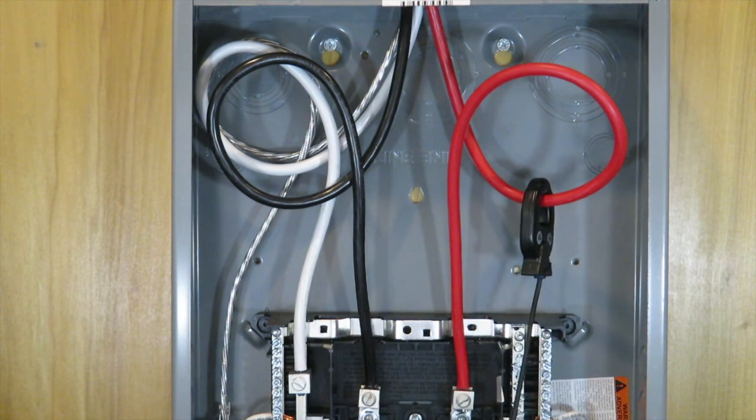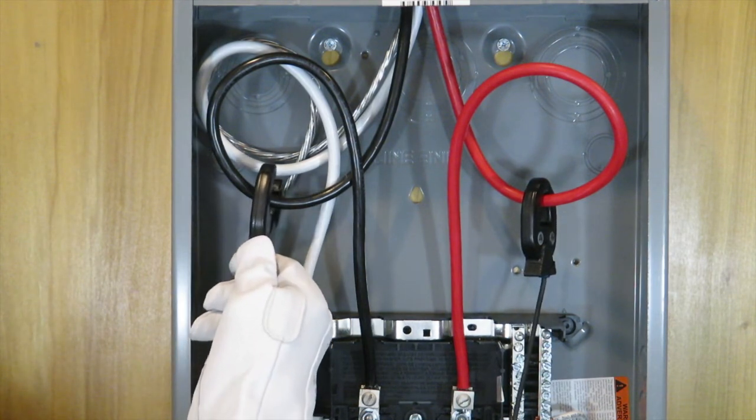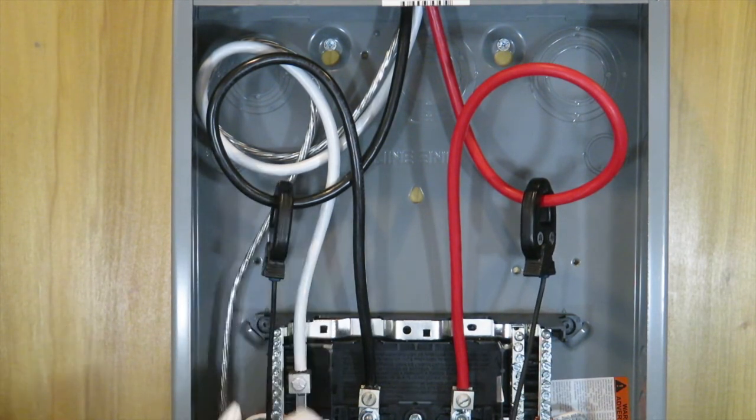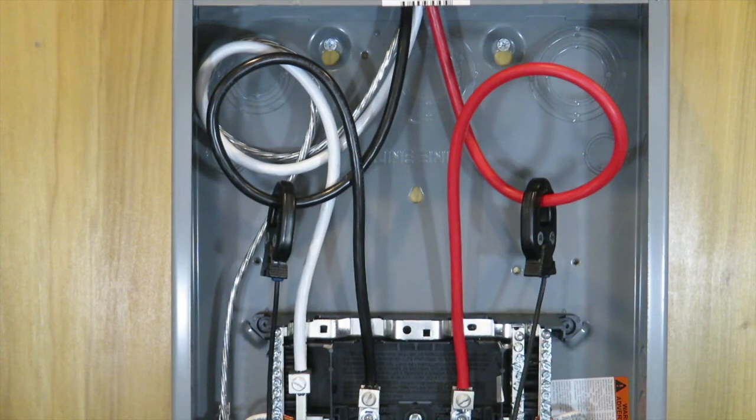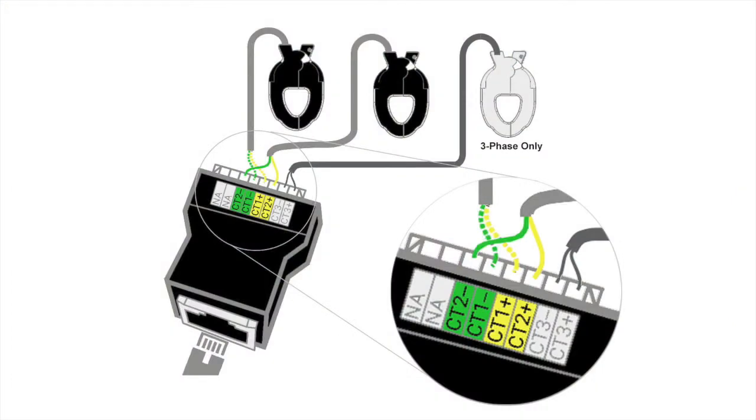It is important that the CTs are placed in the panel such that they are upstream from all loads and the inverter tie-in, whether a line-side tap or back-feed breaker. In other words, the CTs must land on the meter side of the inverter tie-in.